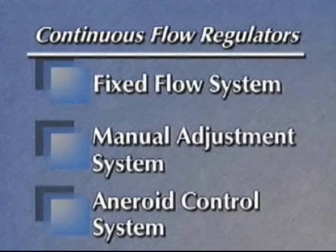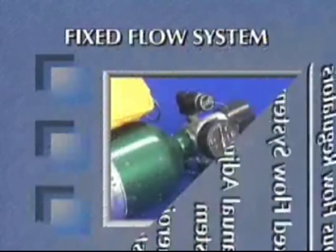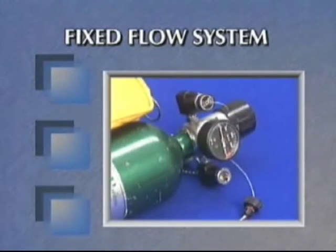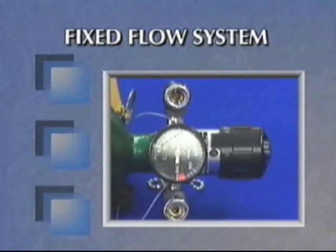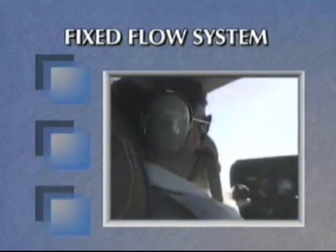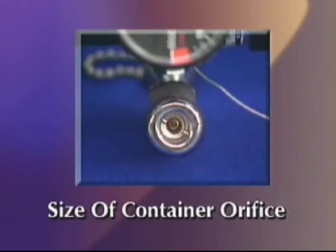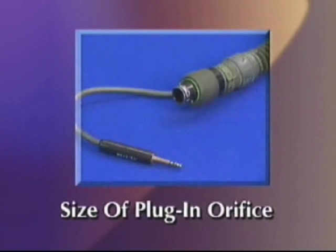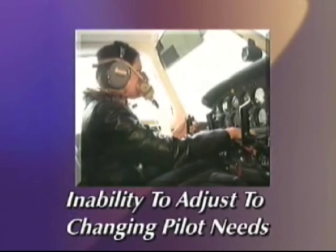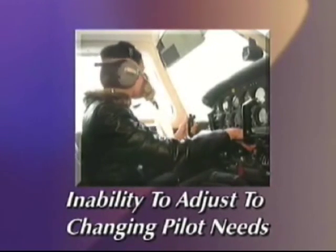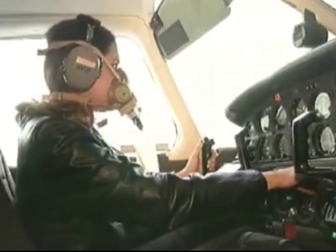There are three types of continuous flow regulators. The fixed flow system delivers oxygen continuously once activated. The amount of oxygen flow is determined by the type of continuous flow system in use, the orifice size coming out of the container, and the orifice size on the plug-in adapter at the end of the mask hose. The primary disadvantage of a continuous flow system is its inability to adjust automatically to the changing needs of the pilot due to level of physical exertion or altitude changes during flight.